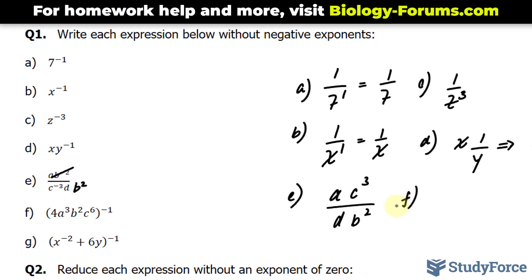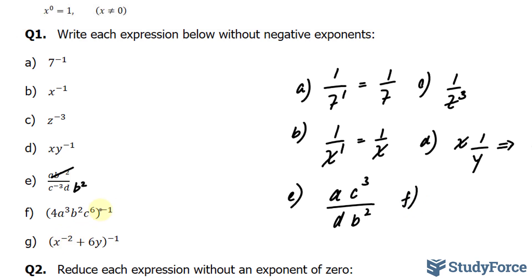In question F, we have this whole expression being raised to the power of negative 1. This means all of these factors will become the denominator, where we have 1 over 4, a to the power of 3, b to the power of 2, c to the power of 6. And all of this now is being raised to the power of positive 1, or we can just write it out the way it is.